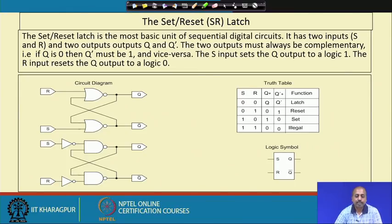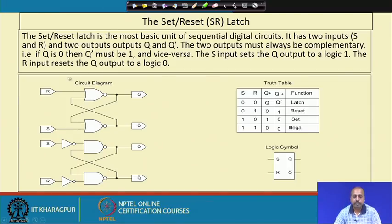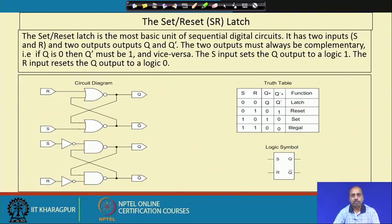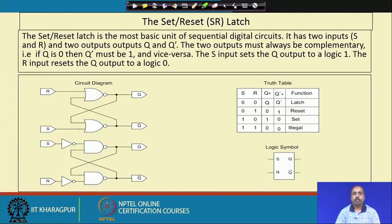We will start with the SR latch, also known as the Set-Reset latch — the most basic unit of a sequential circuit. It has two inputs S and R, and two outputs Q and Q-bar. The two outputs must always be complementary: if Q is 0, Q-bar must be 1 and vice versa. The S input sets the Q output to logic 1, and the R input resets the Q output to logic 0.